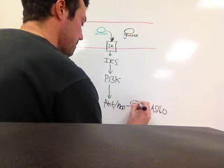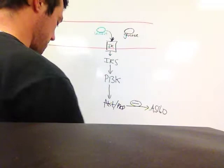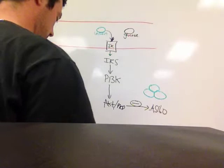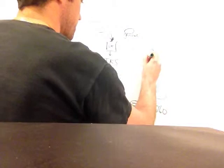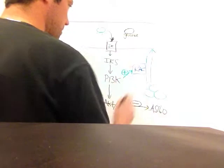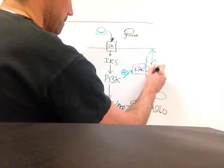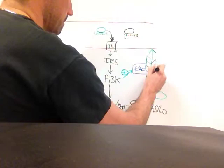This deactivation of AS160 allows for GLUT4 translocation to the membrane. The translocation is mediated by the enzyme RAC, which is also activated by PI3K. This translocation occurs via actin filaments mediated by the activity of RAC.